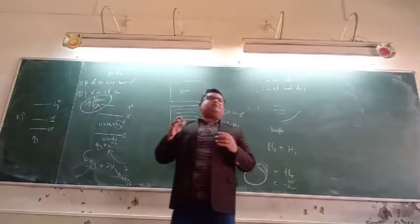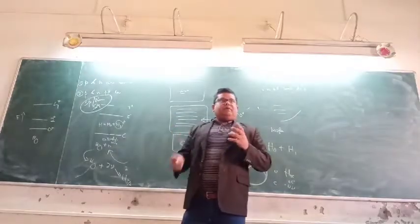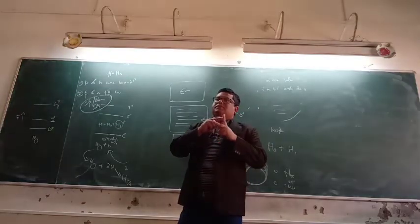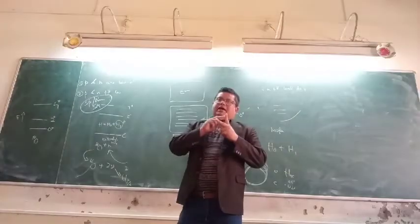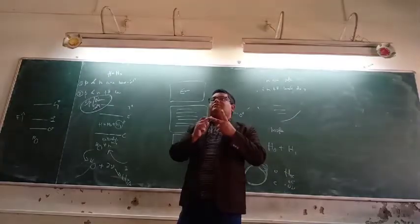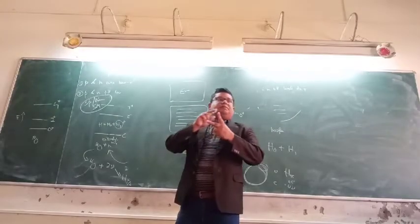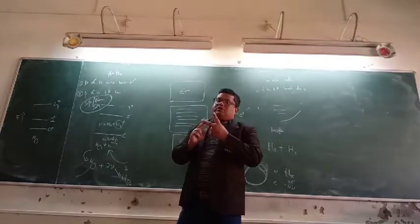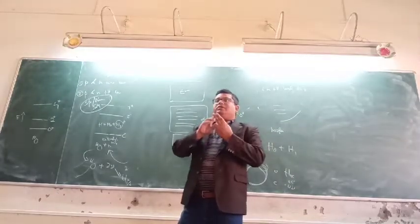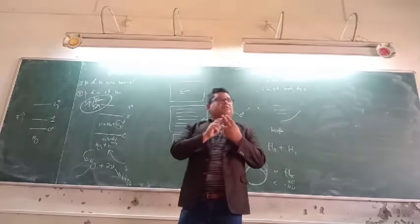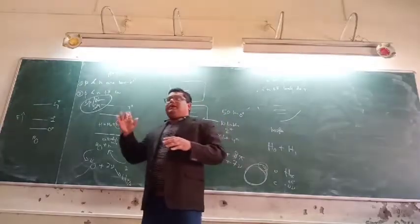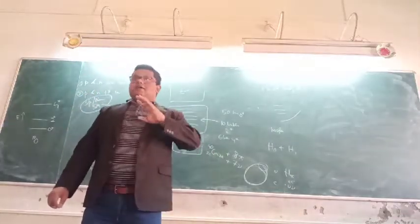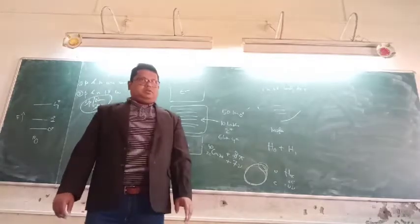Of course there are certain approximations. Number one, we will consider here only two types of bosons. One type of boson gives spin J=0, another type of boson gives spin J=2. So the spin J=0 boson is known as the S boson, and the J=2 boson is known as the D boson. We don't consider any type of interaction between them - no interaction. This is basically IBA1, interacting boson approximation number one. Here we do not consider any interaction between the bosons.